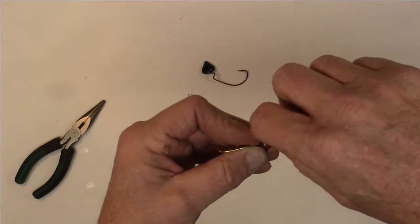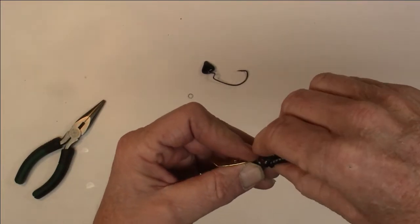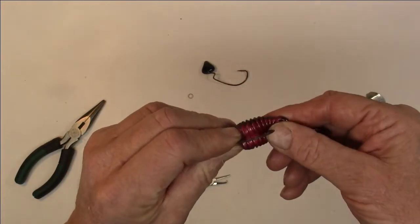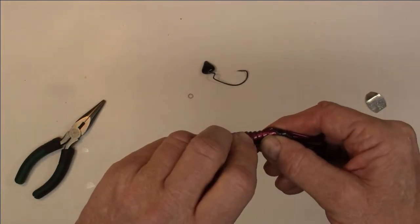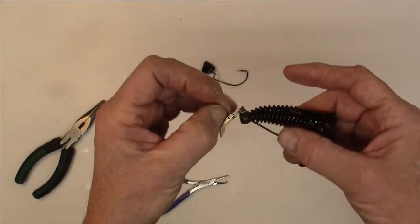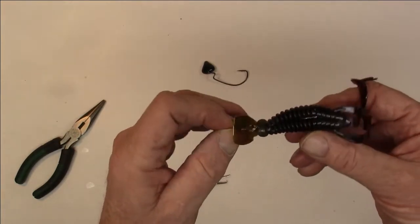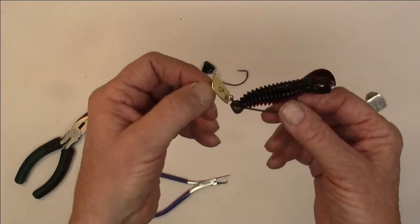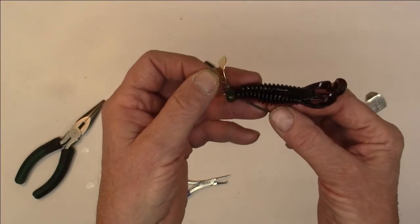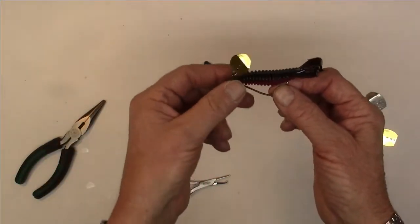They're always fun to get over the hook. One more pivot and then basically we're just going to do as we would any lure we're trying to run weedless, bury that point. I got him upside down but that's okay, there we go. Now I have basically a weedless chatterbait style.